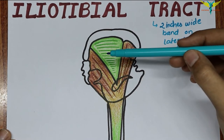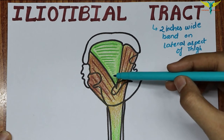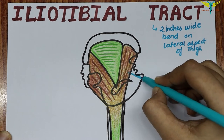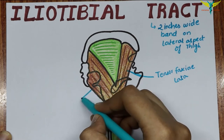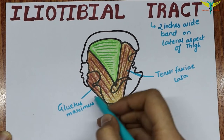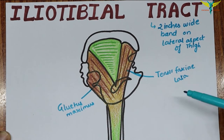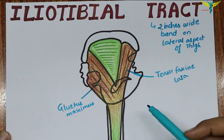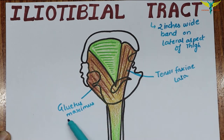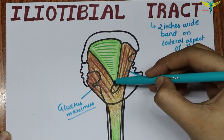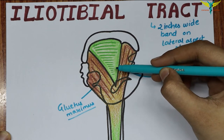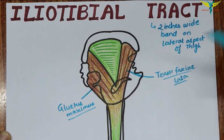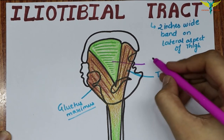Superiorly, along the iliac crest, the tract splits into two layers and encloses two muscles: the tensor fasciae latae and the gluteus maximus. Between these two muscles, it forms a single thickened sheet called the gluteal aponeurosis.